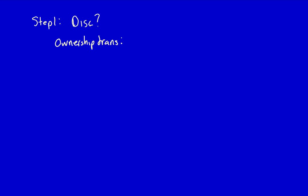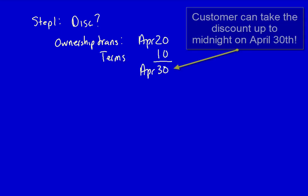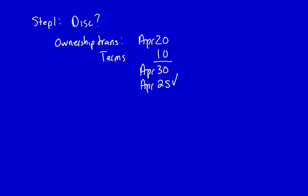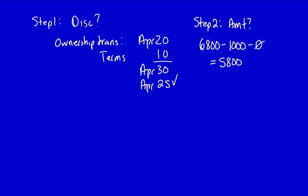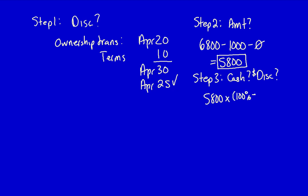Received payment from Sports Retail. Three-step process: Can the customer take the discount? Ownership transferred April 20th, terms 1/10 — the last day Sports Retail can take the discount is April 30th. Today's date qualifies, so the company can take the discount. Step two: the accounts receivable amount is the original invoice minus returns minus allowances — Sports Retail owes us $5,800. Step three: cash received is $5,800 × 99% = $5,742. The discount value is $5,800 − $5,742 = $58.